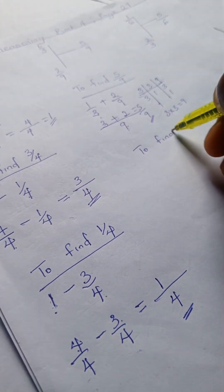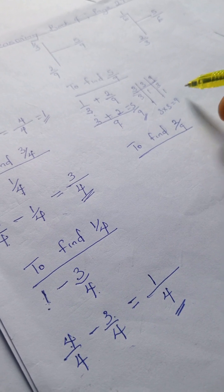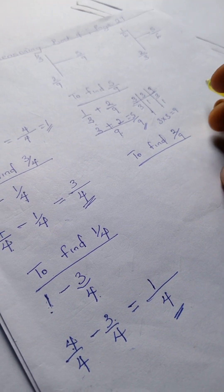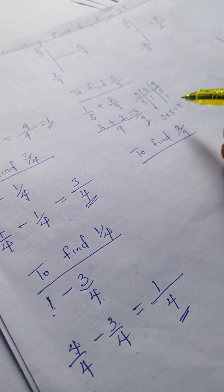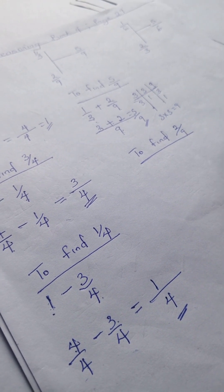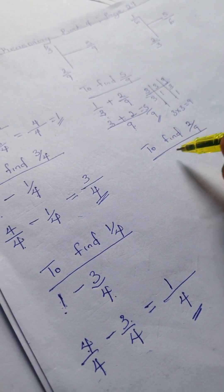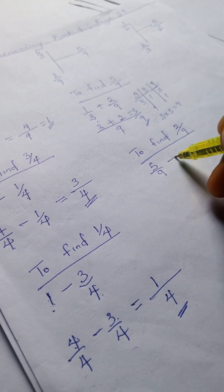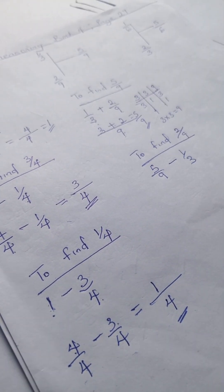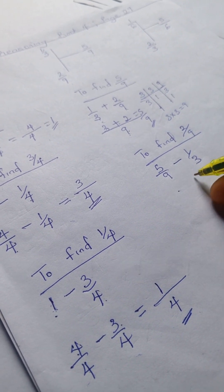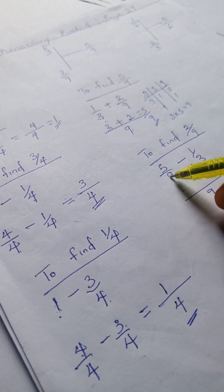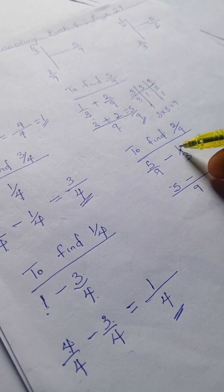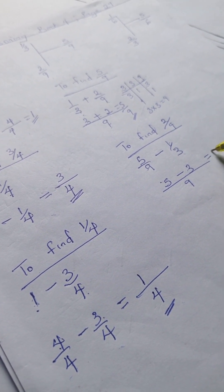To find 2/9, please note that when solving quantitative reasoning it's important to have basic knowledge of mathematics to apply the same principles. This problem will only be challenging if you are not aware of your LCM and LCD calculations. To find 2/9, we have 5/9 minus 1/3. The LCM for these two numbers is 9. So 9 divided by 9 is 1, times 5 is 5; minus 9 divided by 3 is 3, times 1 is 3. Five minus 3 gives us 2 over 9.